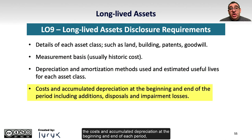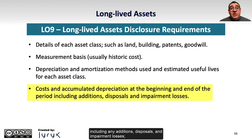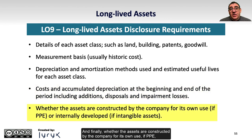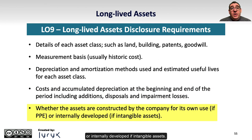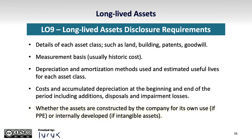Requirements also include the costs and accumulated depreciation at the beginning and end of each period, including any additions, disposals, and impairment losses, and finally whether the assets are constructed by the company for its own use if PPE, or internally developed if intangible assets.